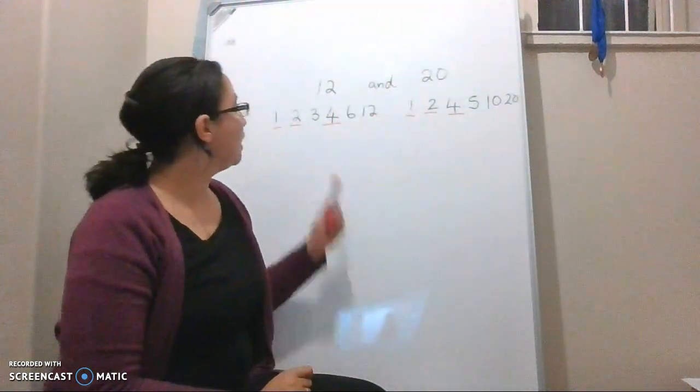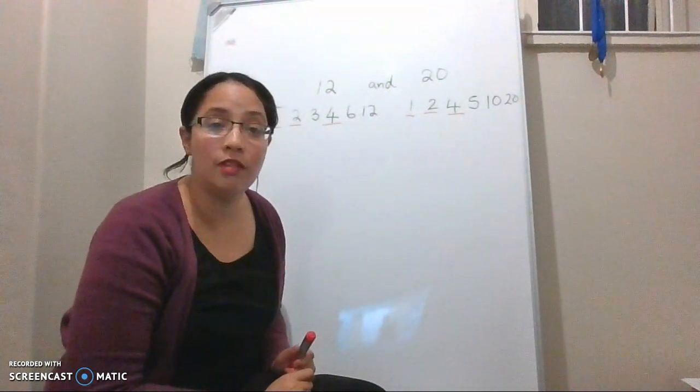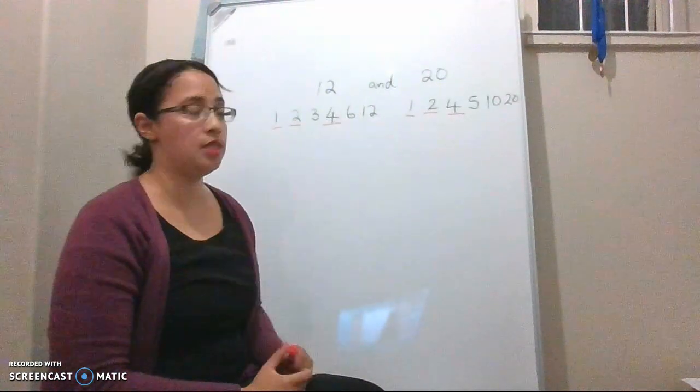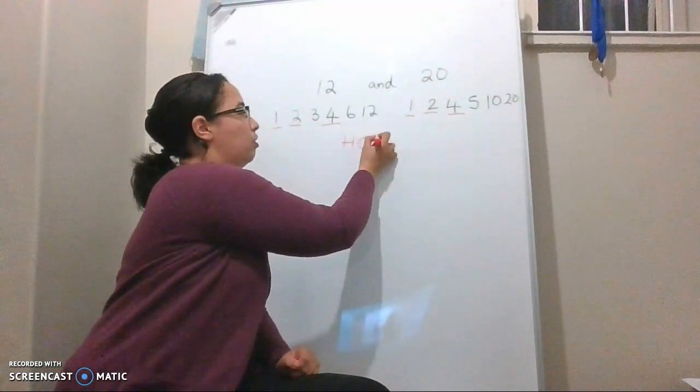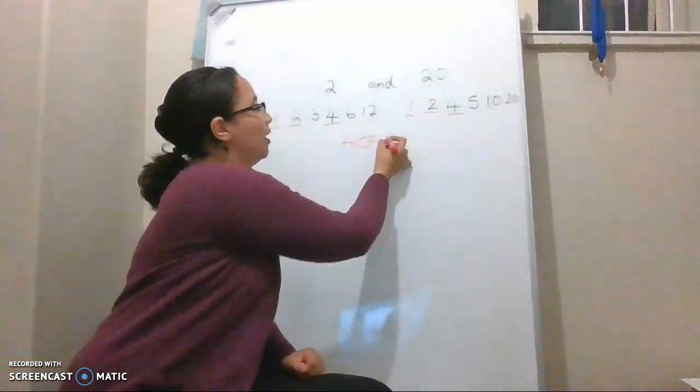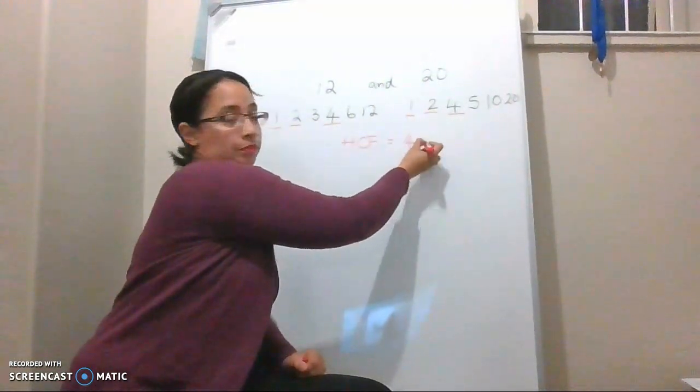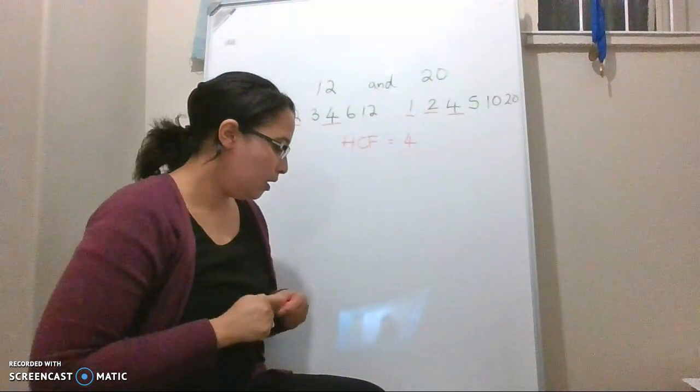The highest common factor is the one that has the biggest value. So which one is the highest common factor? The highest common factor of 12 and 20 is 4.